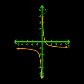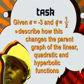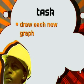Now it's your turn. Given a equals negative 3 and q equals a half, describe how the parent graphs of the linear function, the quadratic function, and the hyperbolic function are changed. Then draw rough sketches of each graph.